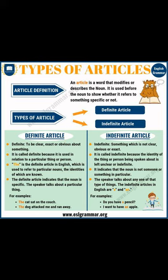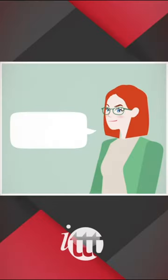As a general rule, we use "a" for nouns that start with a consonant sound, and "an" for nouns that start with a vowel sound. For example: "Do you have a pen?" and "I want to eat an apple."